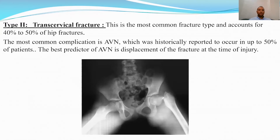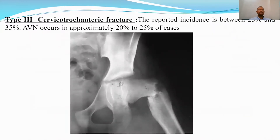The most important predictor of AVN is the displacement of the fracture at the time of injury. Type 3 is the cervicotrochanteric or basicervical fracture with lesser incidence, about 20 to 35% of cases, and AVN is approximately 20 to 25% of cases.